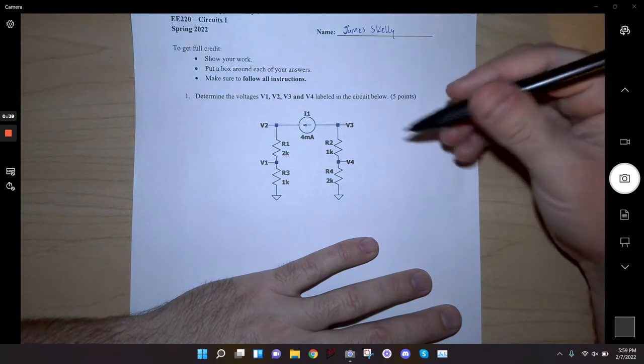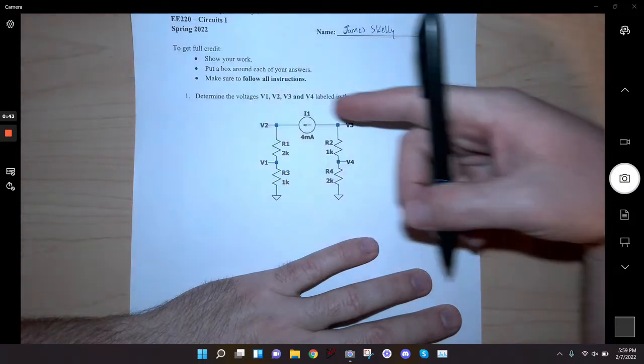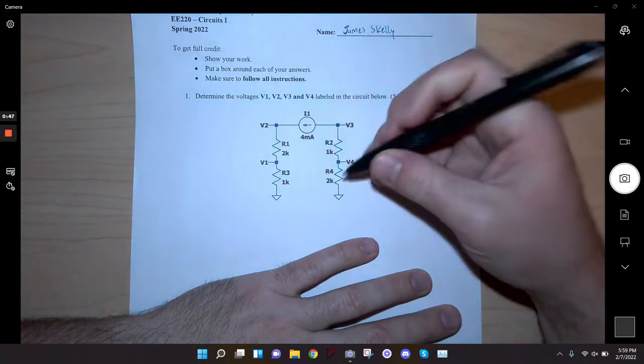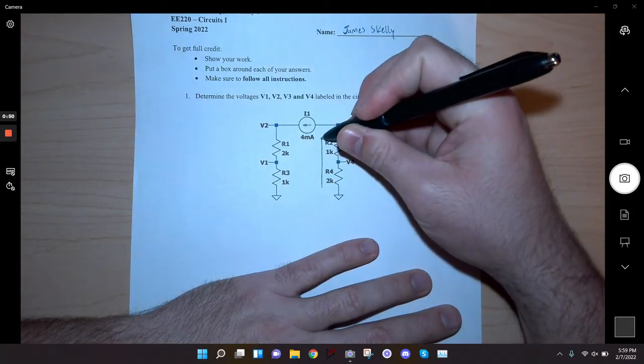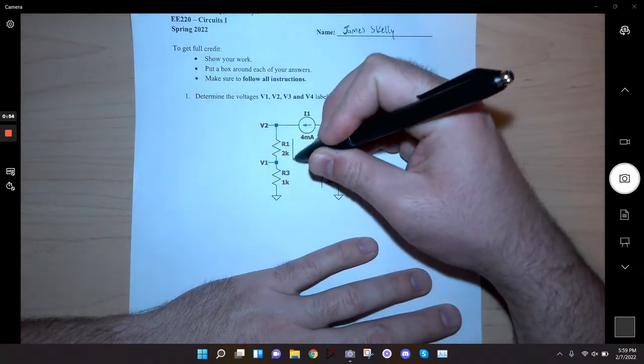This 4 milliamps flows from right to left through this branch of the circuit here, which means that it has to flow up through these resistors over here and then down through these resistors and then back through ground this way.